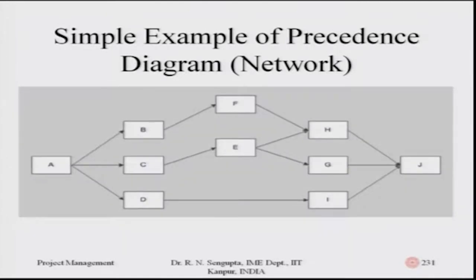After A you have B, C, D jobs and activities; after B you have F; after C you have E; after D you have I. So if the sequence of activities shown in slide 230 is converted into the activity precedence diagram, it has basically A being followed by B, C, D in some sequence. Then F and E lead to H, E leads to G, and D leads to I. Once H, G and I are completed it will go to the end job J which completes the work.